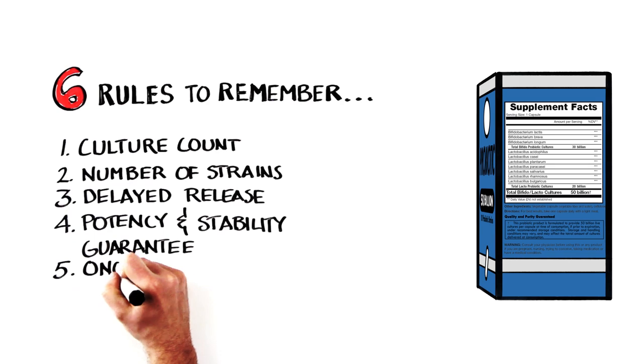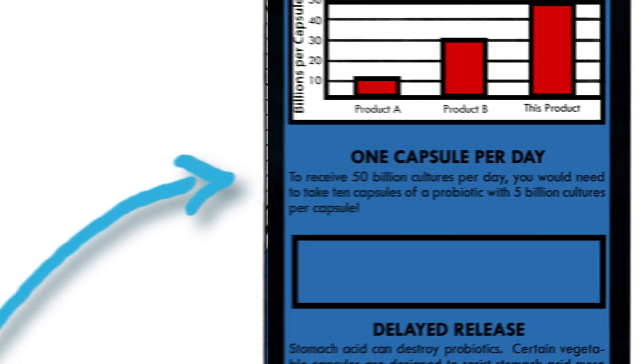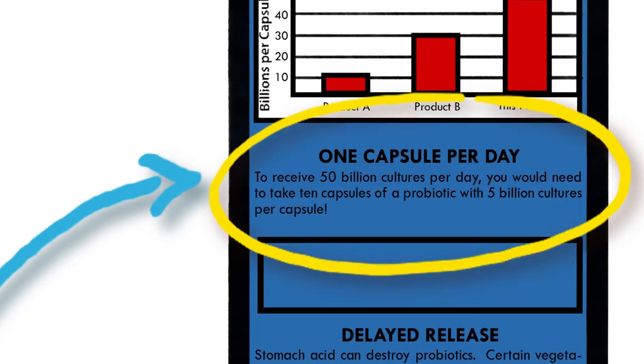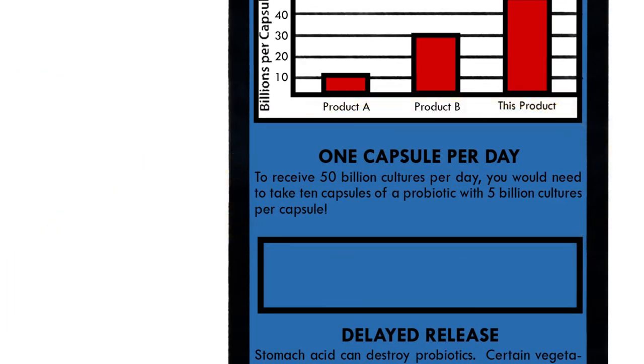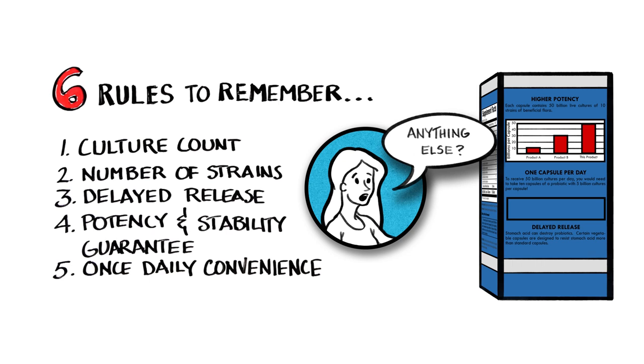And fifth, look for a probiotic that has its full dose in one daily capsule. That way there's no confusion about what to take and when, making it easier for you to get the correct dose. Wow, she said, those are easy and really make sense. So, what's the sixth rule?